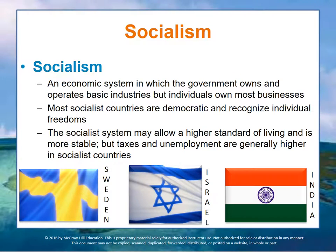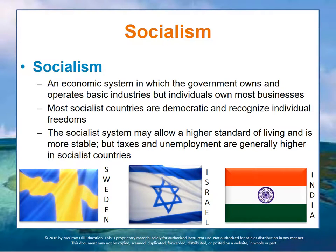Socialism is an economic system in which the government owns and operates basic industries — like the postal service, telephone system, utilities, transportation, health care, banking, and some manufacturing. But individuals own most other businesses like restaurants, beauty parlors, and those kinds of operations.